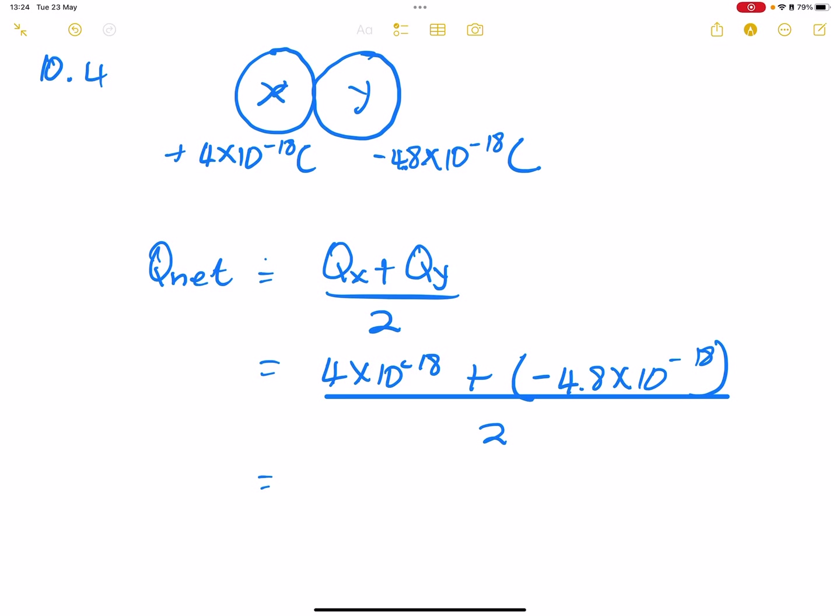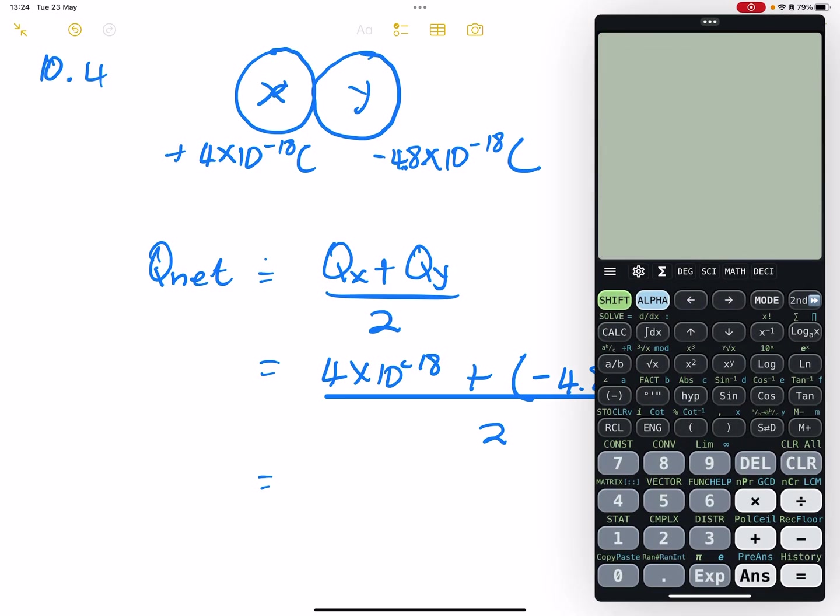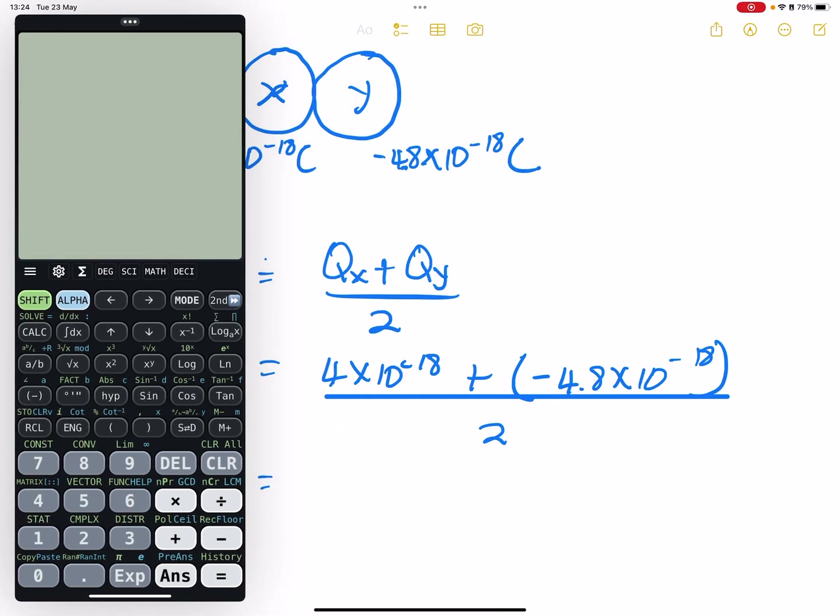So in this case, what does that give us? You can calculate it, but I'd already seen in that case that you've got both of them to the power minus 18. So you can just say 4 minus 4.8, that will give you negative 0.8. You divide that by 2, that gives you negative 0.4. But let's put it in scientific form. So we've got 4 exponent negative 18 plus a negative 4.8 exponent negative 18, and we get an answer, and we take that answer and we divide it by 2. And what does it give us? Negative 4 exponent minus 19. This is in Coulombs.